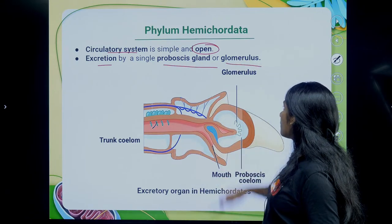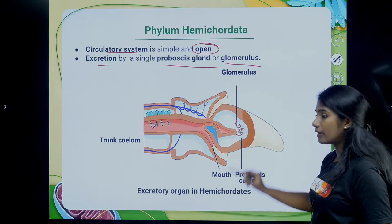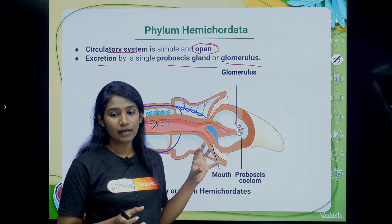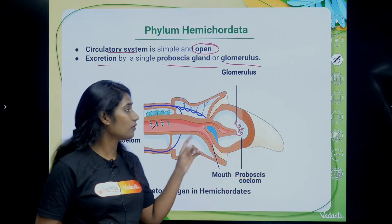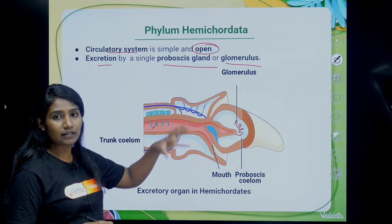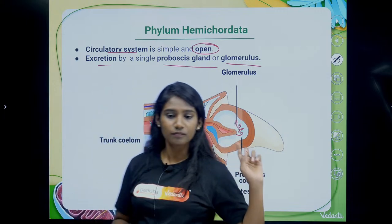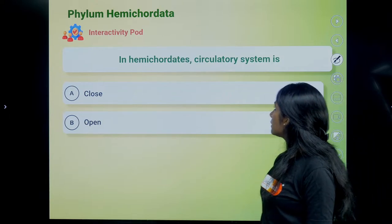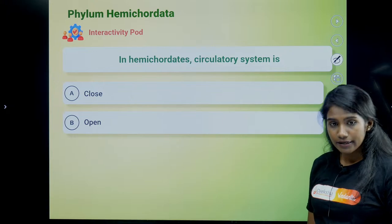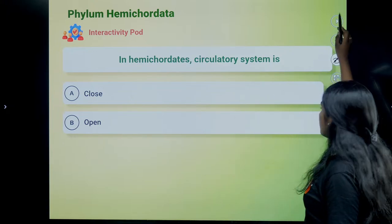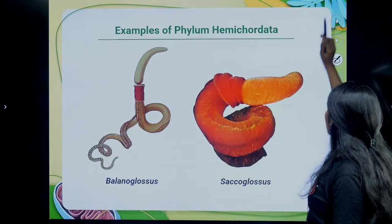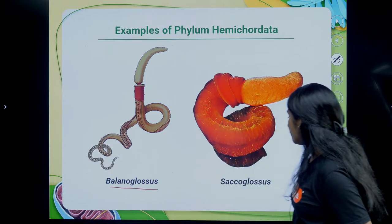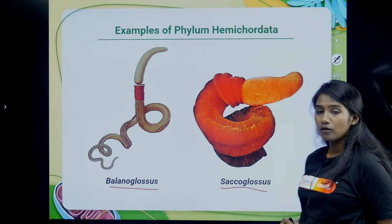Glomerulus is a blood capillary present in the nephron — you have studied this in class 10 life processes. Even in Hemichordata, the animals show presence of glomerulus. The circulatory system in Hemichordata is open. Examples of phylum Hemichordata are Balanoglossus and Saccoglossus.